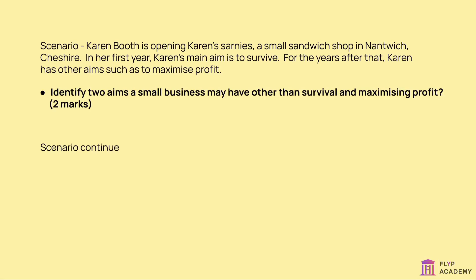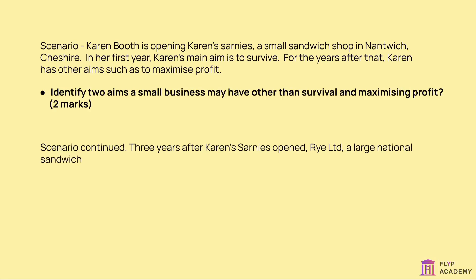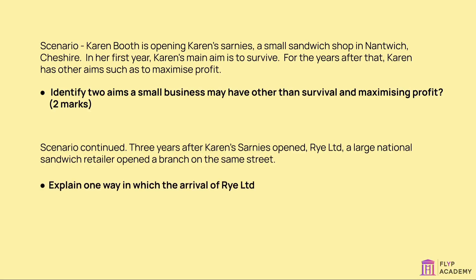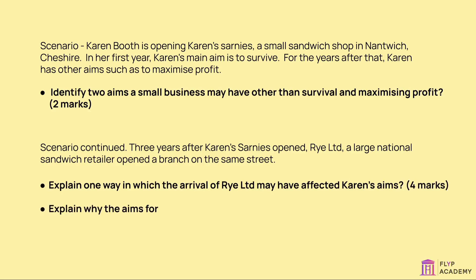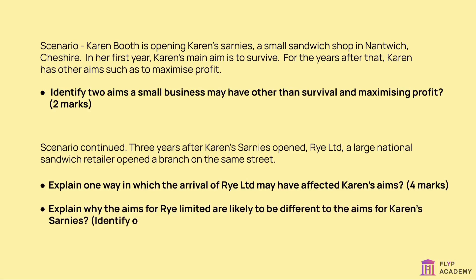Scenario continued: three years after Karen's Sarnies opened, Rye Limited — a large national sandwich retailer — opened a branch on the same street. Explain one way in which the arrival of Rye Limited may have affected Karen's aims. (Four marks.) Explain why the aims of Rye Limited are likely to be different to the aims of Karen's Sarnies — identify one aim Rye Limited might have in your answer. (Three marks.)